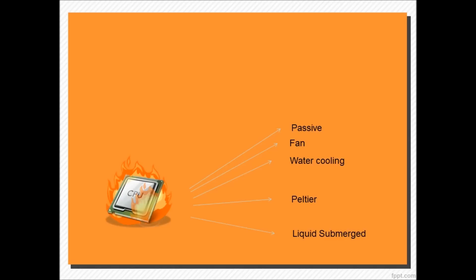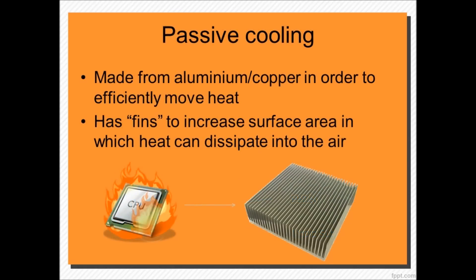The oldest type of cooling is passive cooling. Passive cooling works by placing either a copper or aluminium heatsink on the CPU. The heat generated is conducted by the metal, and the fins aim to increase the surface area in which the heat can dissipate into the air.